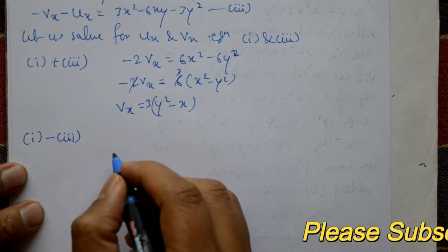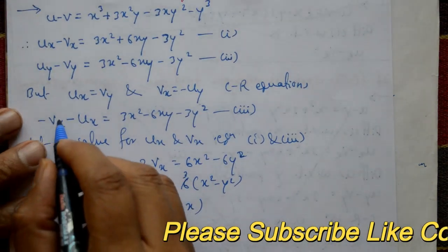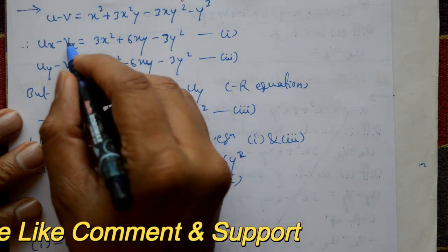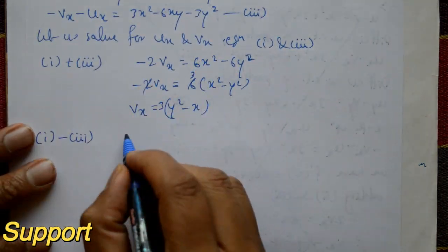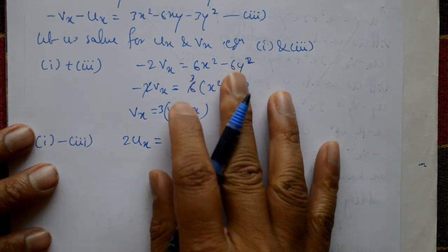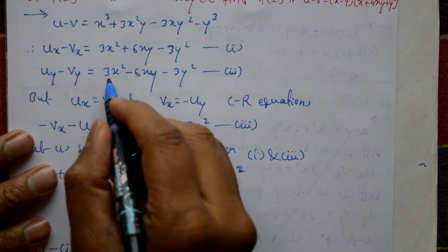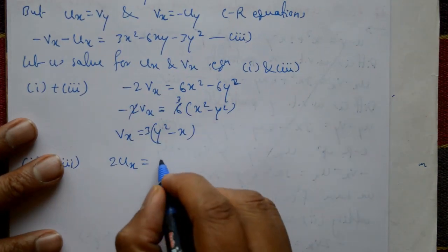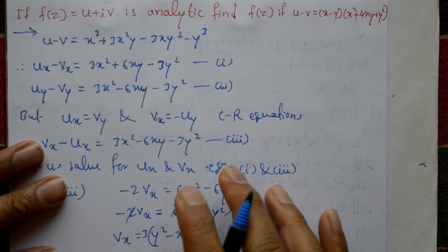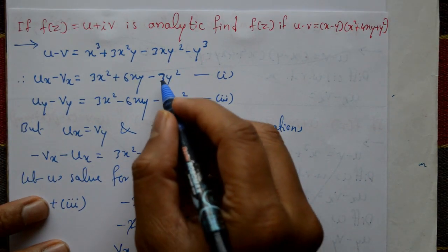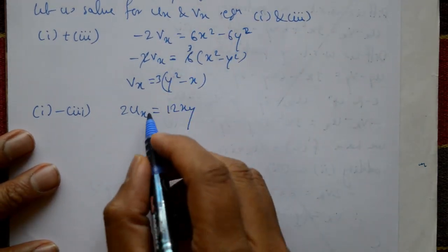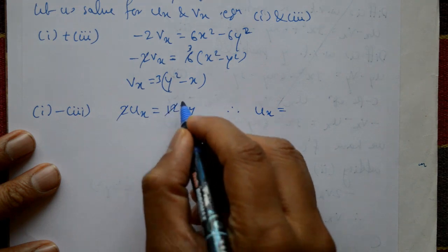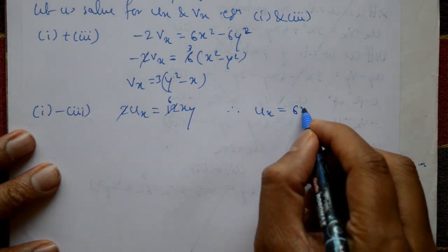Now subtract equation three from equation one. The ∂v/∂x terms cancel, giving 2·∂u/∂x = 6x² + 6xy + 6xy - 6x² = 12xy, so ∂u/∂x = 6xy.